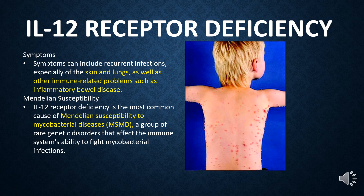IL-12 receptor deficiency is the most common cause of Mendelian susceptibility to mycobacterial diseases, MSMD, a group of rare genetic disorders that affect the immune system's ability to fight mycobacterial infections.